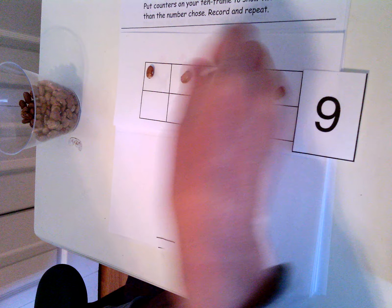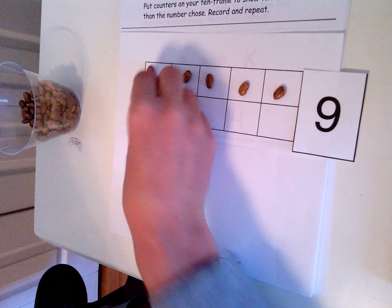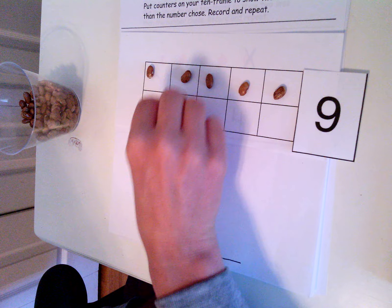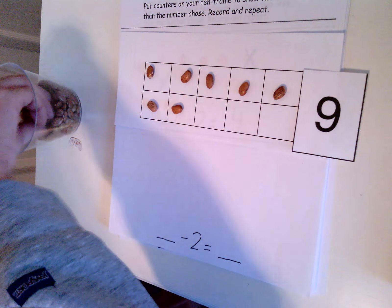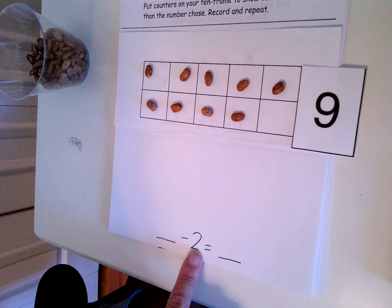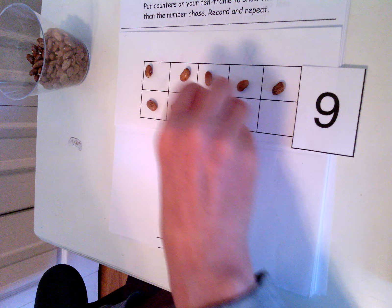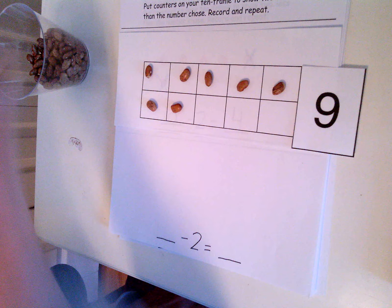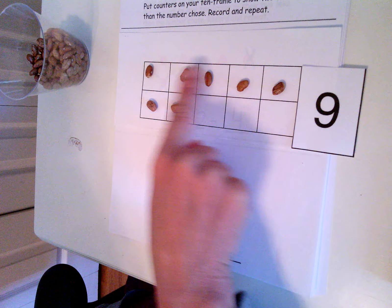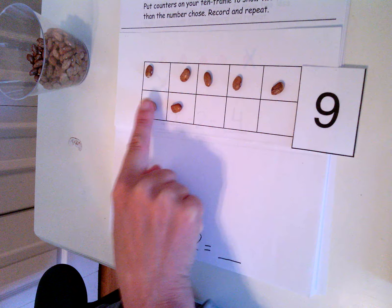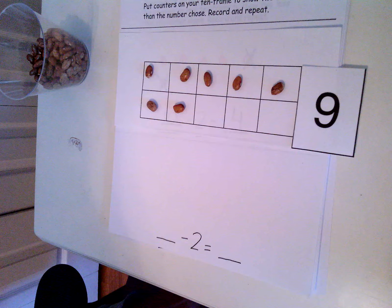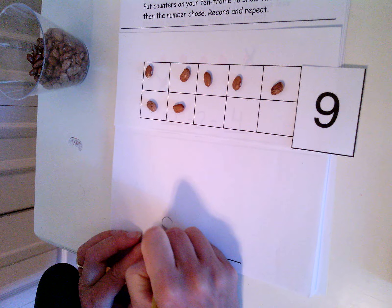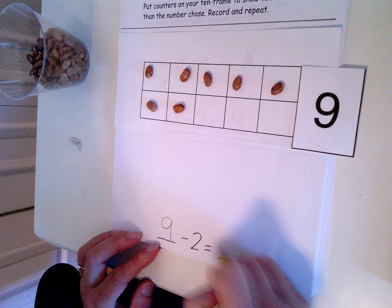It's nine minus two, so I need to take two off. And now I have one, two, three, four, five, six, seven. Nine minus two equals seven.